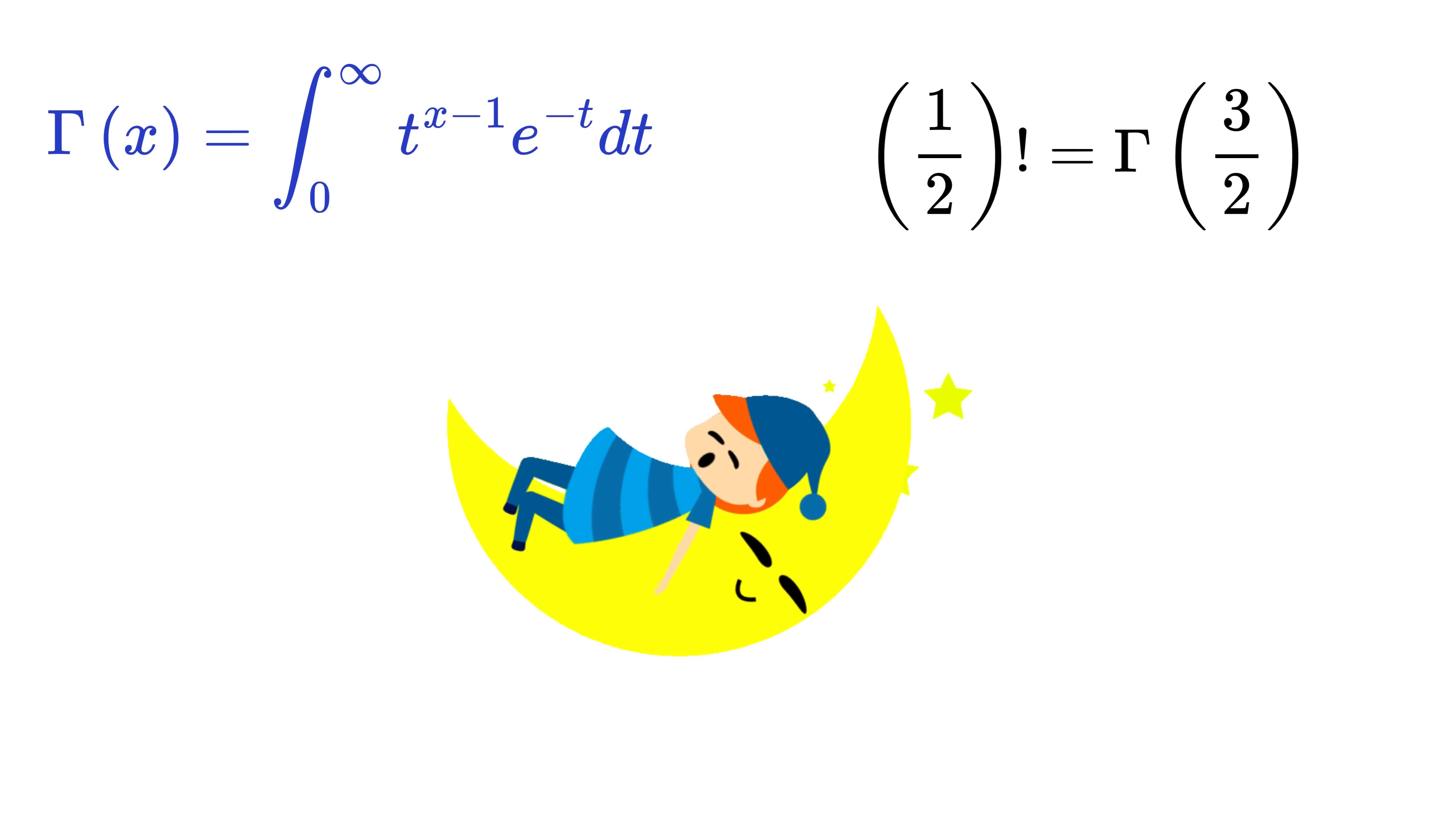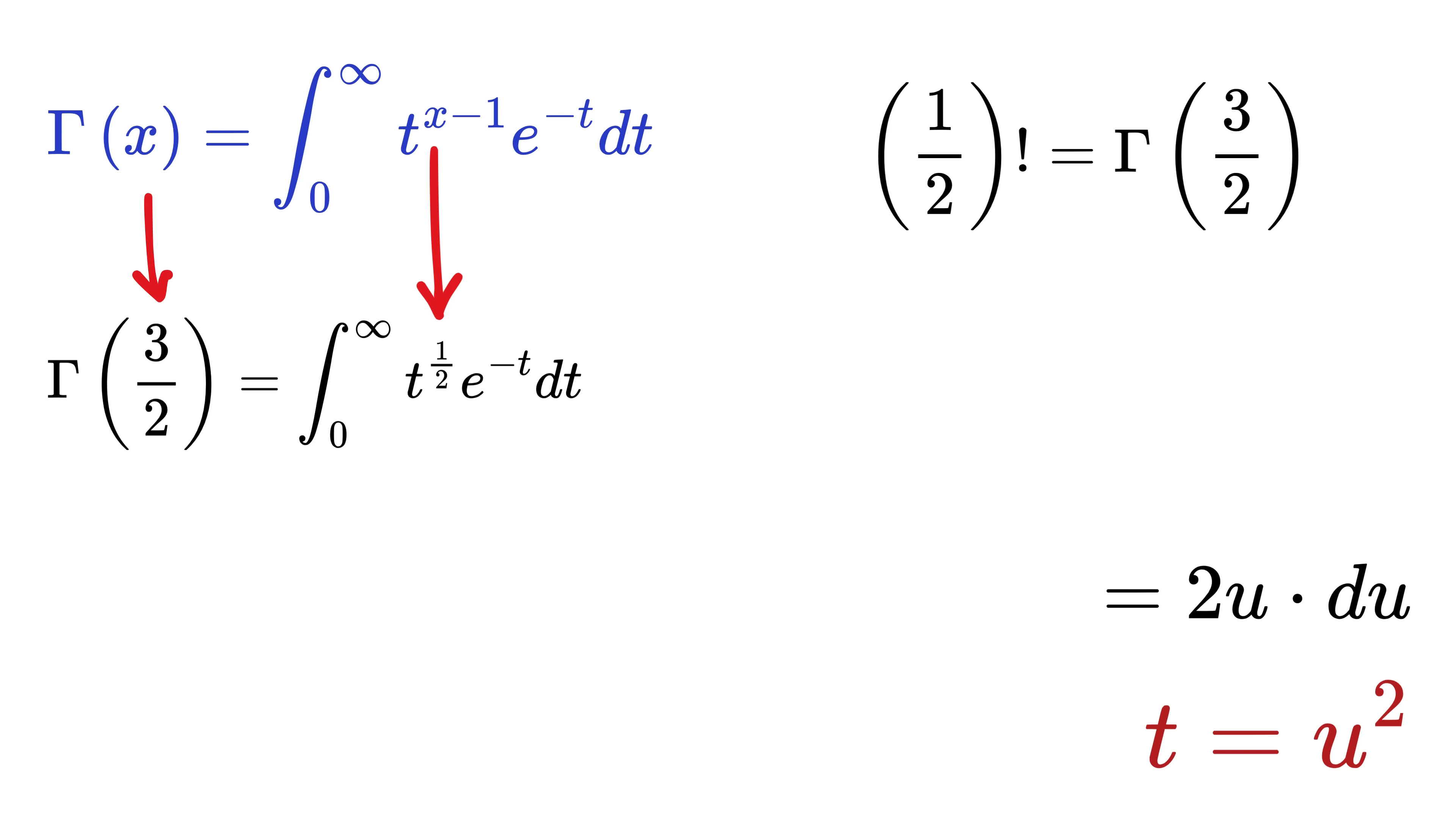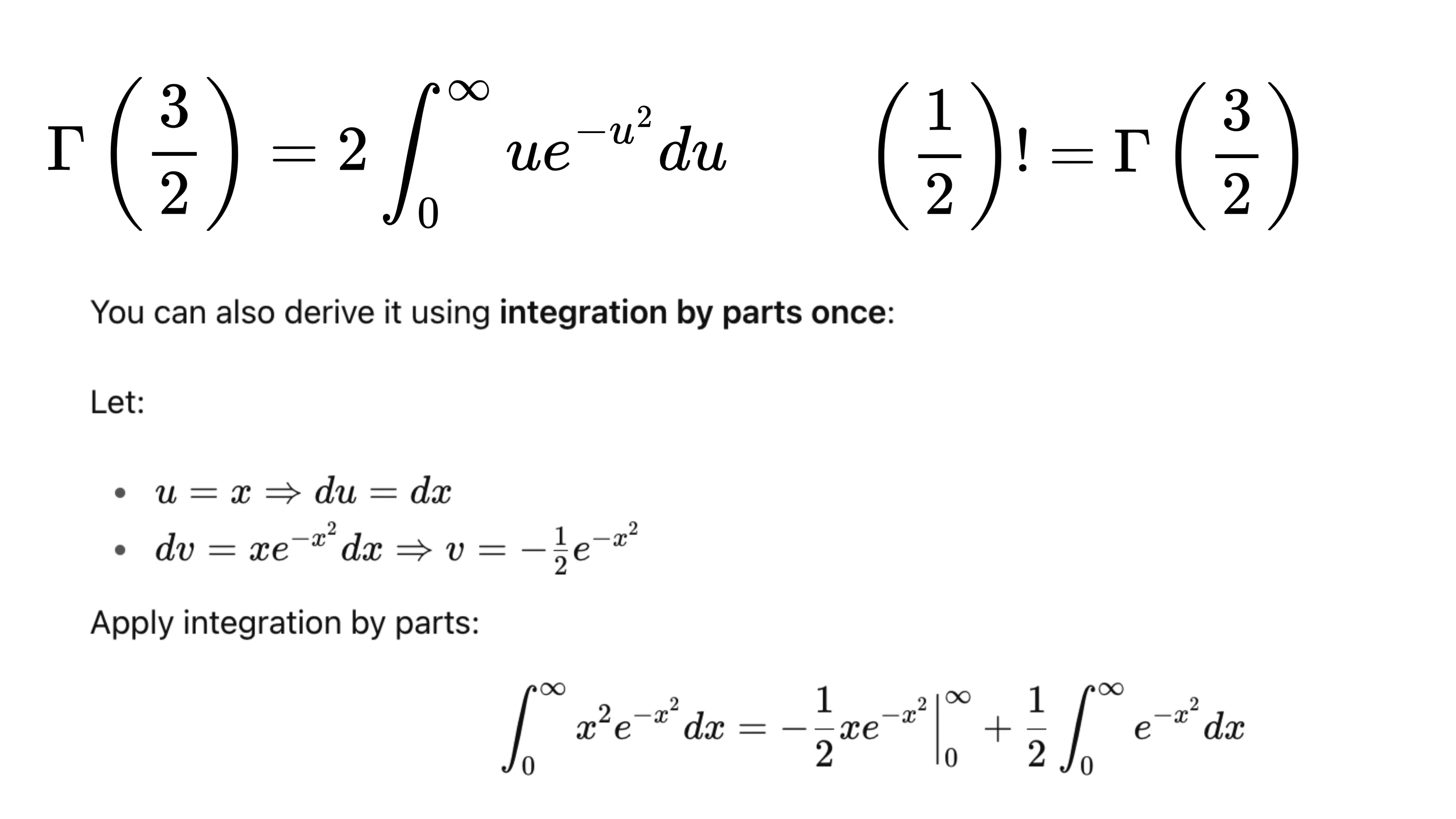Now ready for the real magic? Put x as 3 over 2 inside this integral formula. We get integral 0 to infinity of t raised to 3 over 2 minus 1, or t raised to half, times e raised to minus t. Now let's use a variable u where t equals u squared, so 2 times u times du equals dt. Substitute both of them here to get this in terms of u. Now finally, if you use integration by parts on this one, you will end up with this expression.